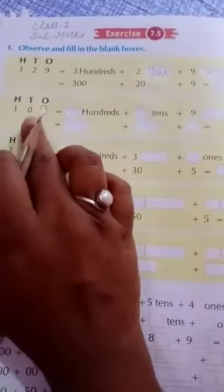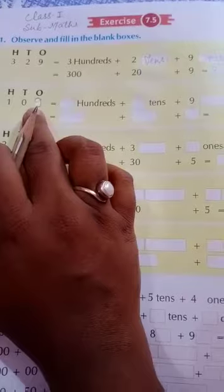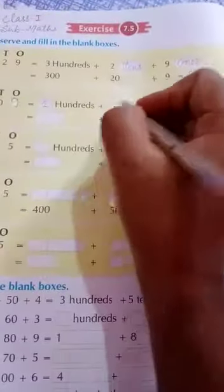Second, there is 109. Here is 5, my mom has put here a whitener. Here is 9. In 109, what is our 100? And 0 is 10 and 9 is 1.